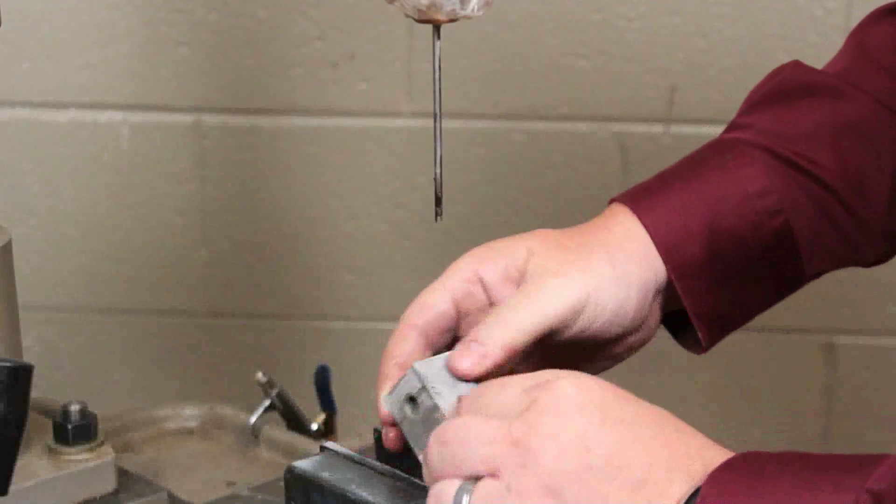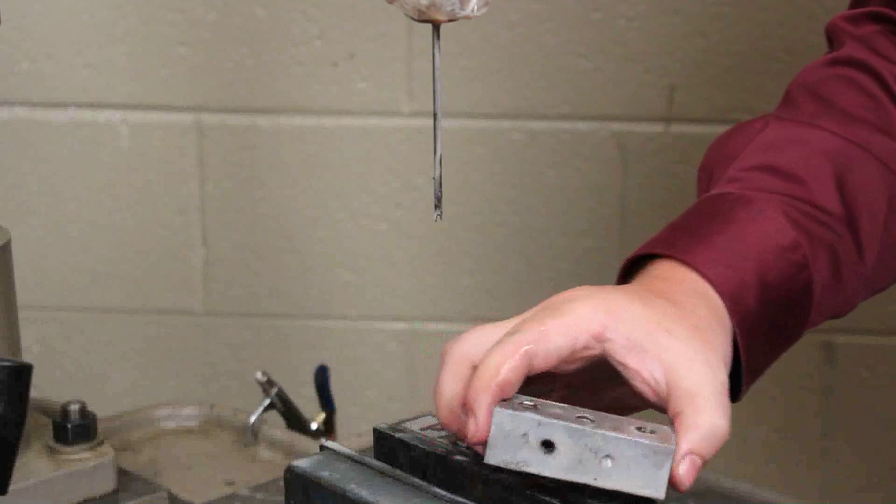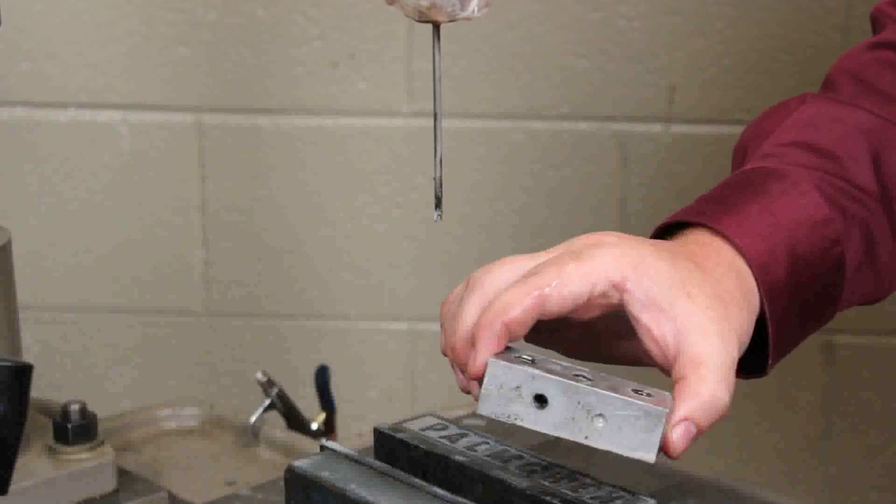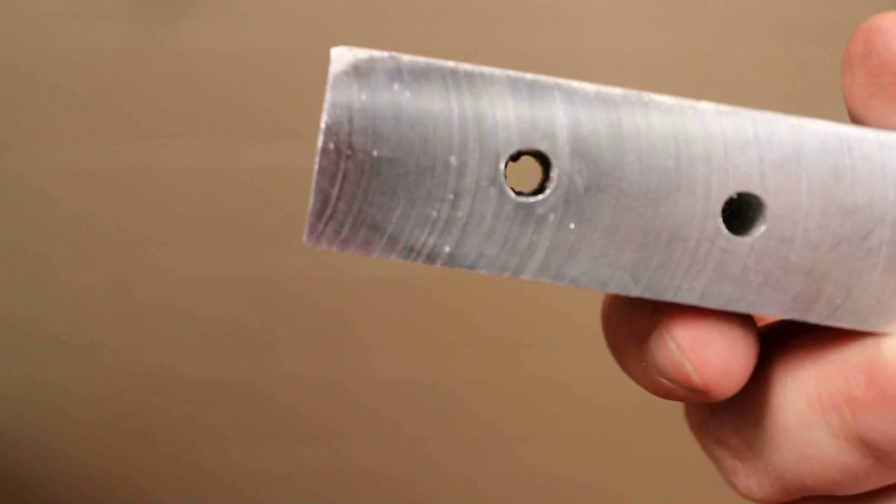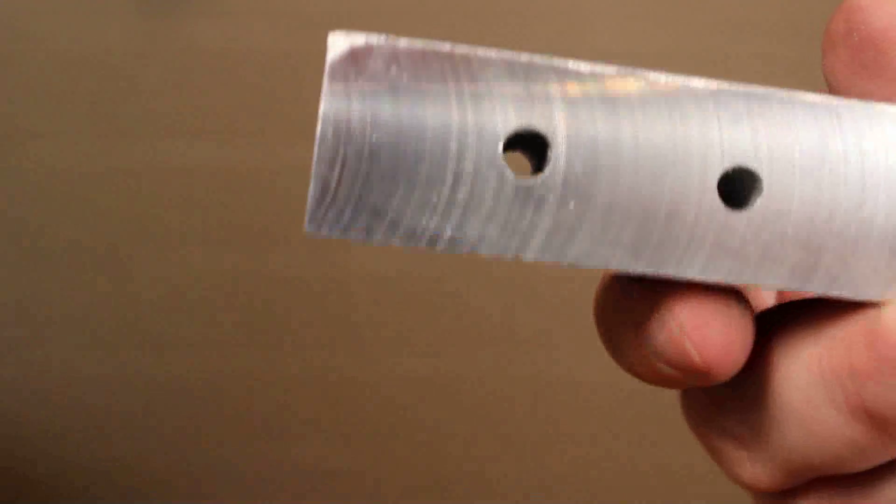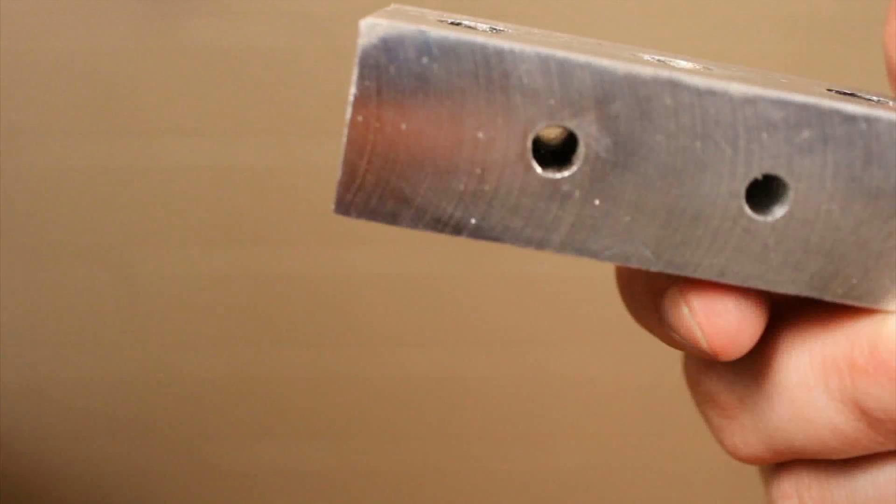And as we unlock that there, you can see we've completely taken out our tap. Here's a close-up view of the tap we just removed. You can see there's no damage to the threads and your part has been saved.